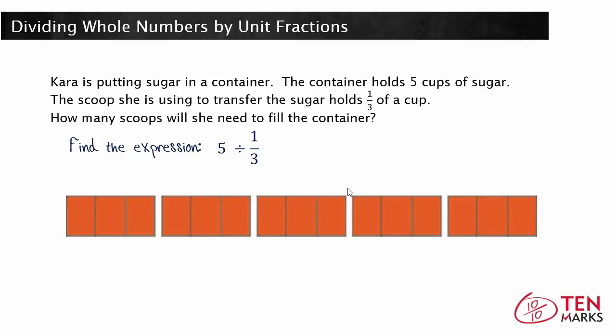Picture this as Kara's container with five cups. You repartition each cup into thirds, since the scoop she's using holds one-third of a cup. And you see visually that five divided into thirds gives you fifteen sections right here.